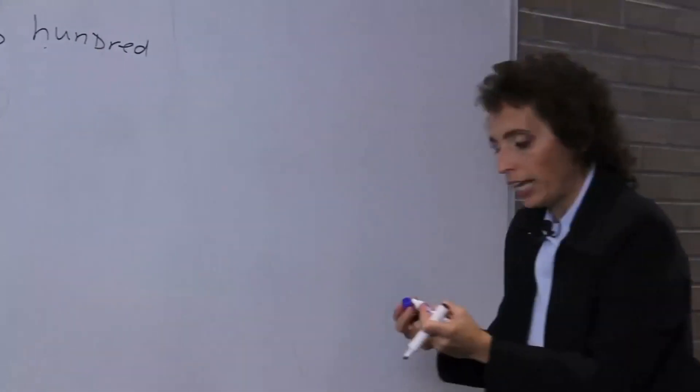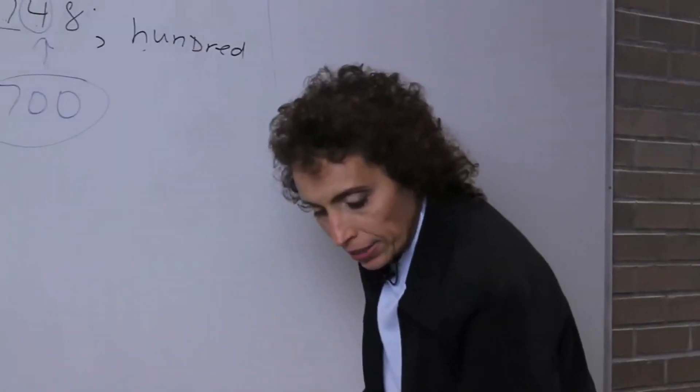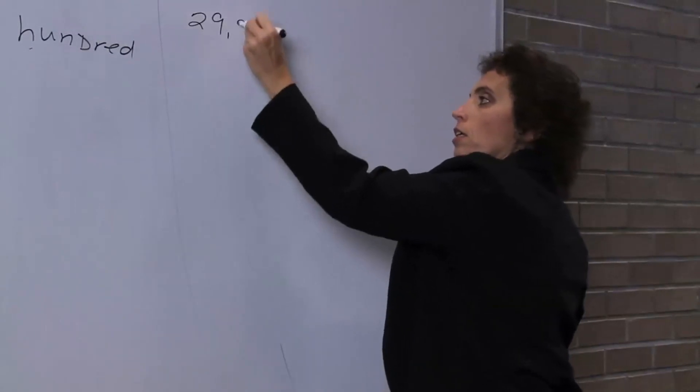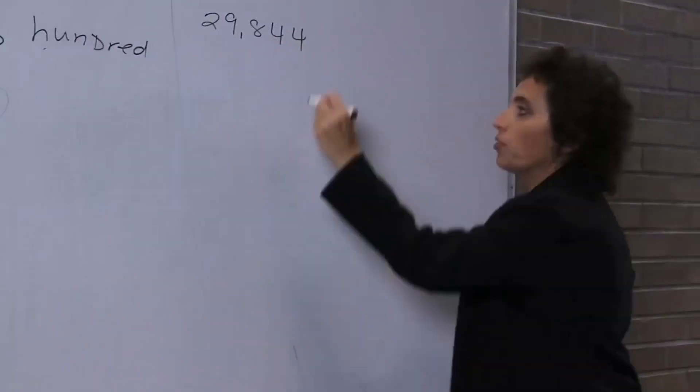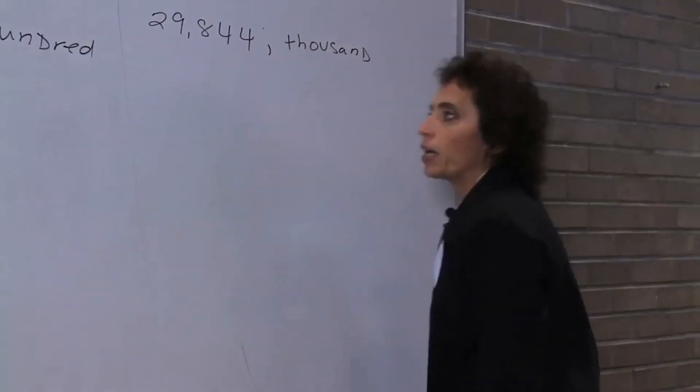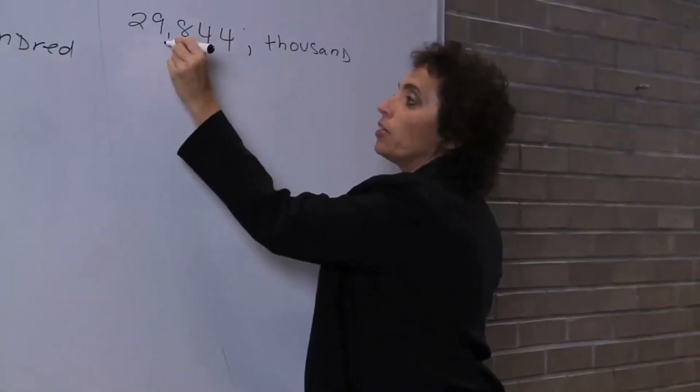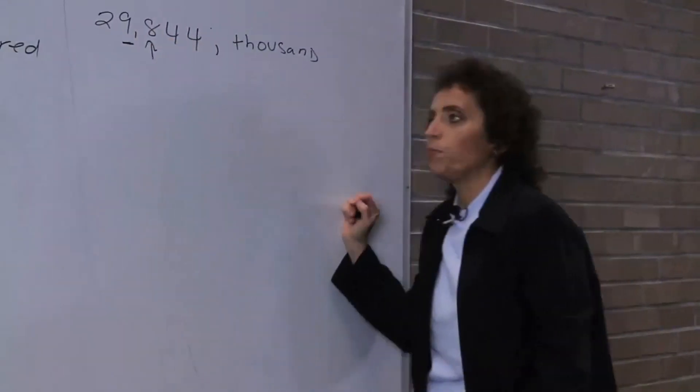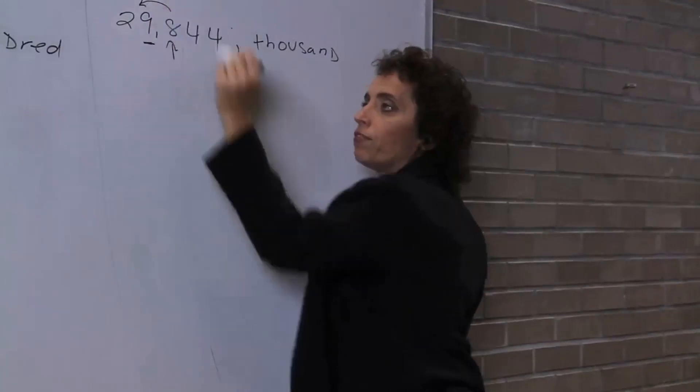Let's do the last example. The last example is 29,844, and we want that to the nearest 1,000. So we have to go to the thousands place, and the thousands place is right here. I look at the number to its immediate right, and I see that I have to add 1 because that is a 5 or higher.